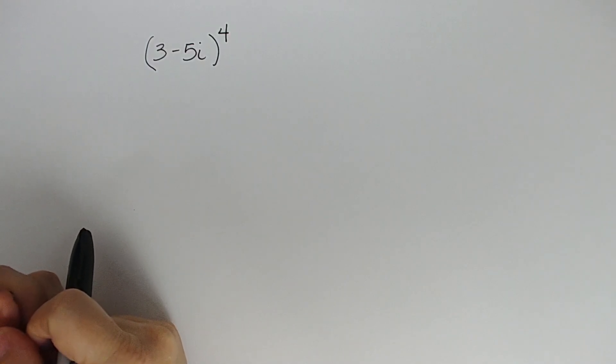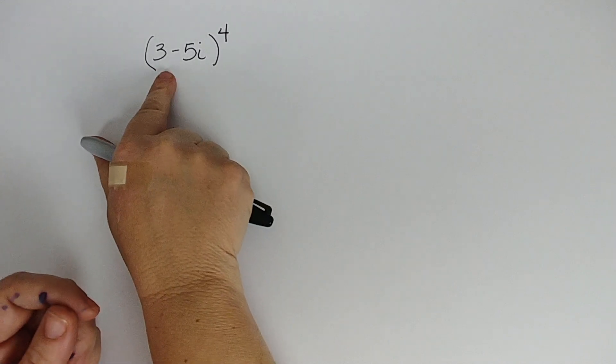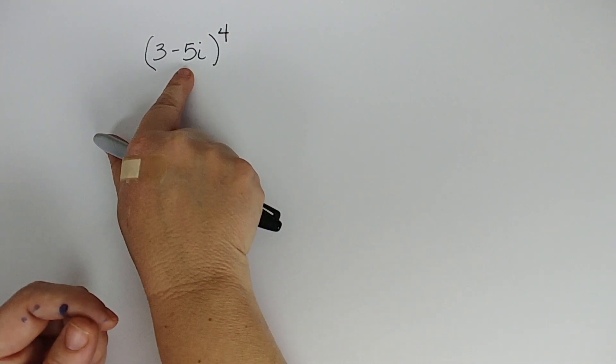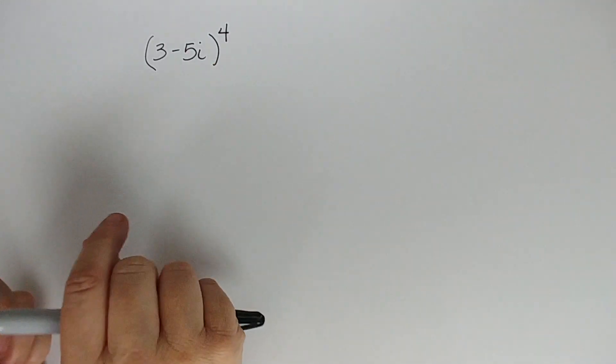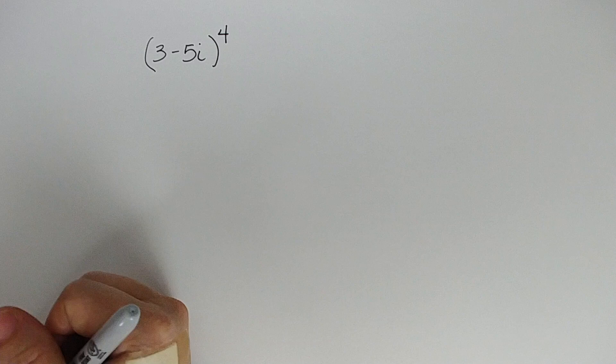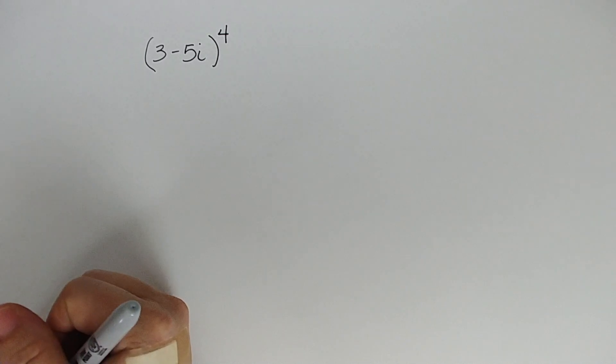Welcome to Solve My Math Homework. Today we have a problem with a complex number written in rectangular form, 3 minus 5i. Three is the real part, negative five is the imaginary part. It's all raised to the fourth power. The directions say use DeMoivre's Theorem to evaluate and then write in rectangular form.